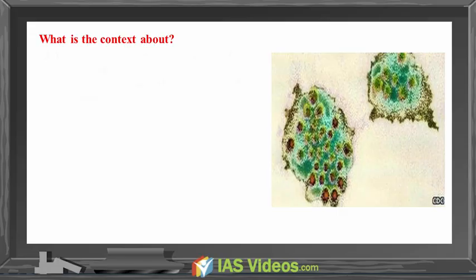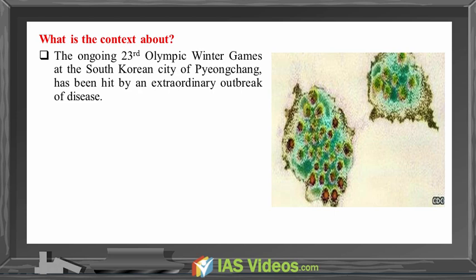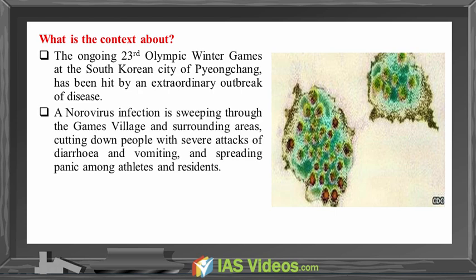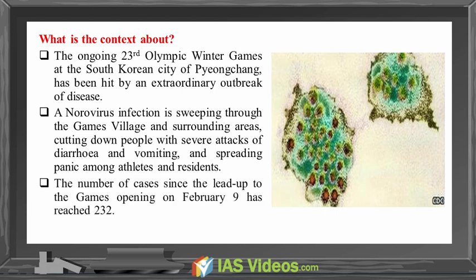The ongoing 23rd Olympic Winter Games at the South Korean city of Pyeongchang has been hit by an extraordinary outbreak of disease. A norovirus infection is sweeping through the Games village and surrounding areas, cutting down people with severe attacks of diarrhea and vomiting and spreading panic among athletes and residents. The number of cases since the lead-up to the Games opening on February 9th has reached 232.